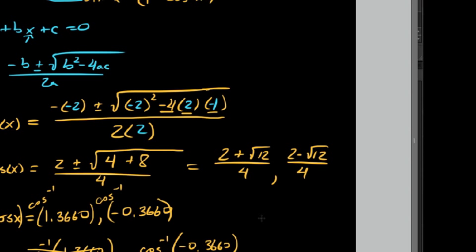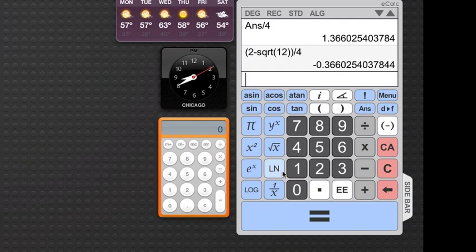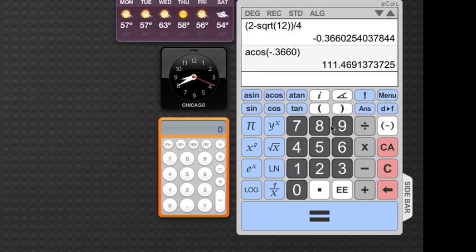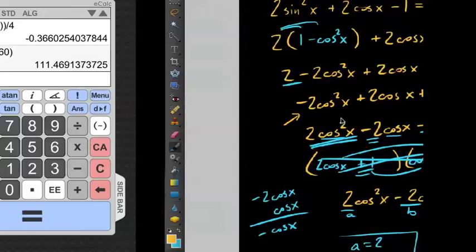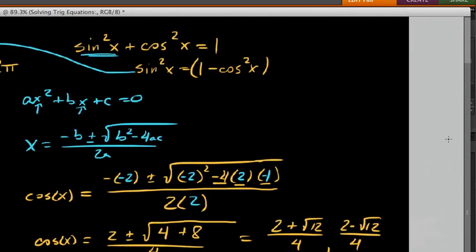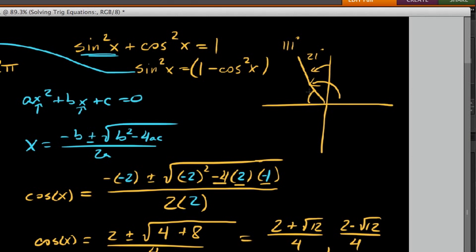And so we say the second one here, if we did cosine inverse of negative 0.3660, our cosine of negative 0.3660, we get about 111.46 degrees. So let's go ahead and sketch a picture of what this would look like. So 111.46, which is roughly 21 degrees past 90, which leaves us this reference angle here to be about 69 degrees.